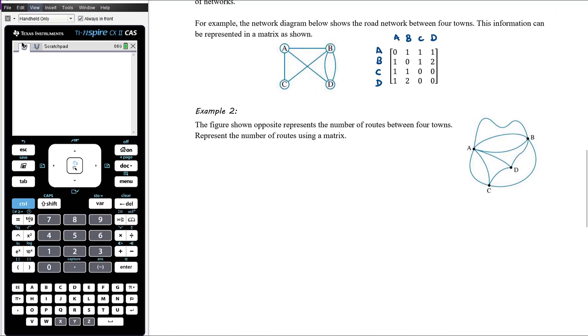So, example two. The figure shown opposite represents the number of routes between four towns. Represent the number of routes using a matrix. So if we've got four towns, it's going to be a 4x4 matrix. I'm going to label it just so I can be clear about what I'm doing. So again, we're going to have that leading diagonal of zeros. No roads from A to A, no roads from B to B, no roads from C to C, and no roads from D to D.